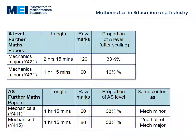The minor option can be taught in year 12 alongside AS maths. The major option is probably best taught over two years. If you want to enter for AS further maths, there's an AS unit called Mechanics A with the same content as mechanics minor. There's also a second AS unit called Mechanics B with the same content as the second half of mechanics major. This one is best taught in year 13, and it's designed for students who are able to take AS further maths in year 13.